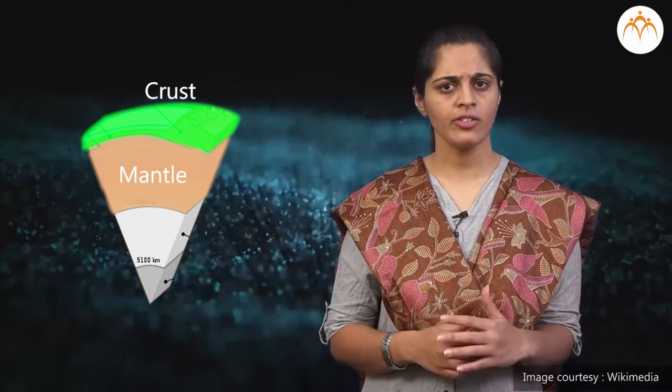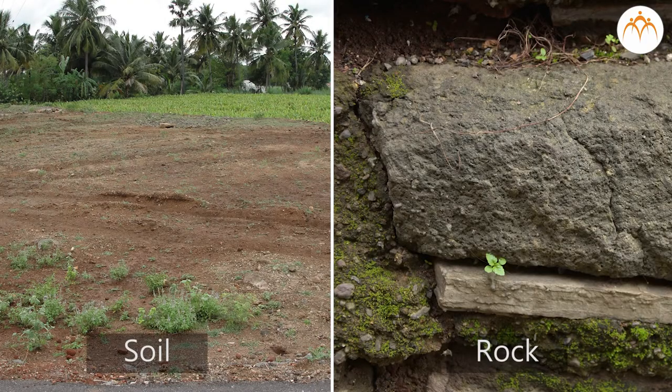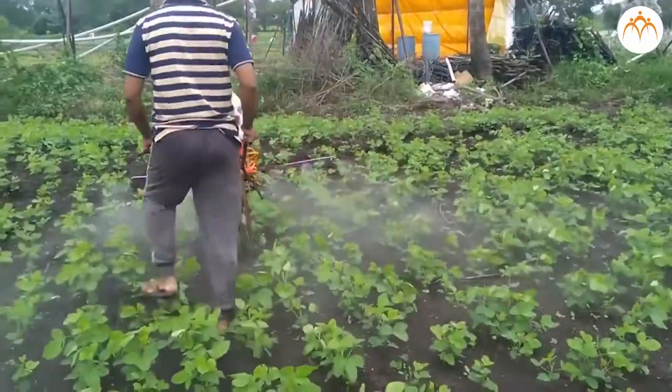The term lithosphere refers to the topmost solid outer rigid surface of the earth. Lithosphere is made up of two layers, namely crust and upper part of mantle. Crust is the topmost layer of the earth's surface. It comprises of both soil and rocks seen in all landforms. The thickness of the crust varies from 5 to 50 kilometers, and it is in this layer that plants grow using the nutrients present in soil.